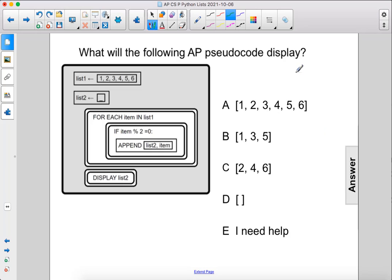What will the following AP pseudocode display? Okay, here we have a list 1 with 6 numbers and then an empty list 2.